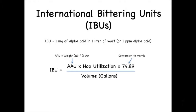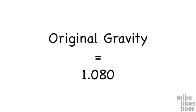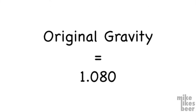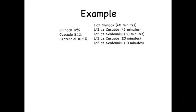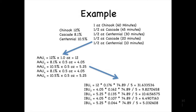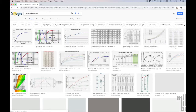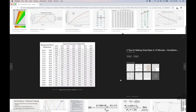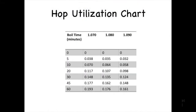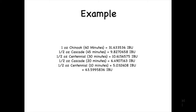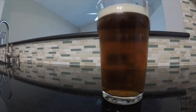Now that we know how to compute the IBUs, let's work an example for a pale ale with a few different types of hops. We'll assume an original gravity of 1.080, a volume of 5 gallons, and the following hop schedule and alpha acid values. We'll start by computing the alpha acid units for each hop addition, then pull up the utilization chart for a boil with an original gravity of 1.080. Just do a Google Images search for hop utilization chart and pick one — they should all be the same. Finally, we'll add the results together, giving us an IBU value of 63.6.